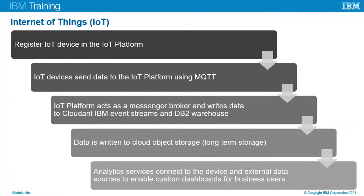Here's a basic overview of the IoT process. First, the IoT device is registered in the IoT platform. Then IoT devices send data to the IoT platform using MQTT. The IoT platform acts as a message broker and writes data to IBM Event Streams and DB2 Warehouse. From there, data is written to cloud object storage for long-term storage. Finally, analytics connect to device and external data sources to provide custom dashboards for business users.